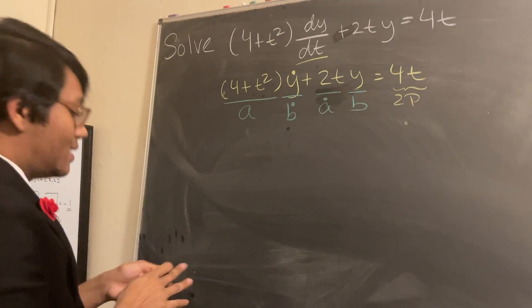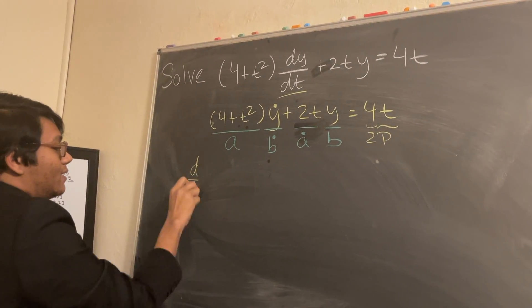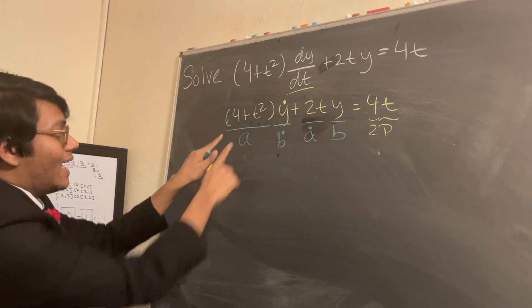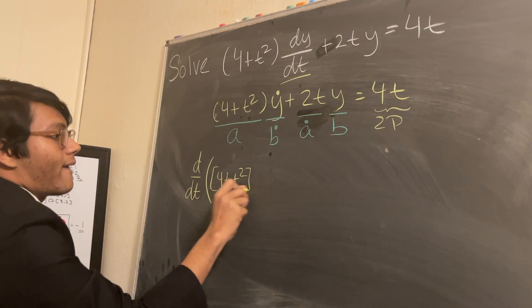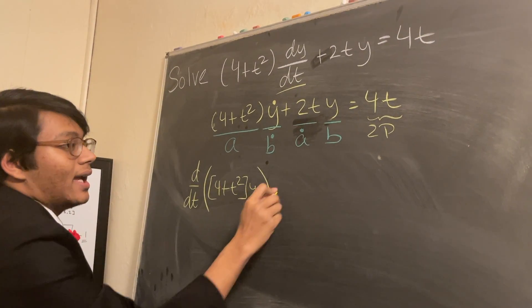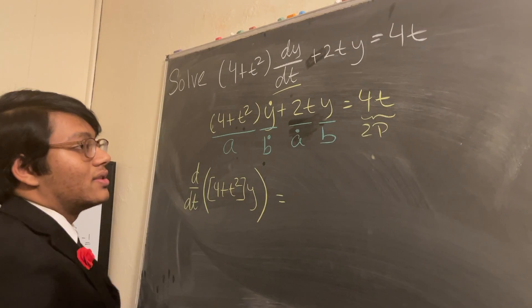So we can rewrite this as d/dt of (4+t²)y, which is (4+t²)y' + 2ty. And on the right-hand side, we have 4t.